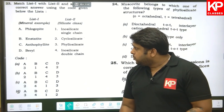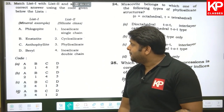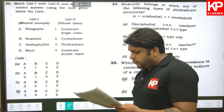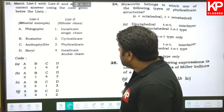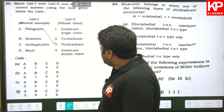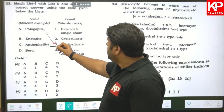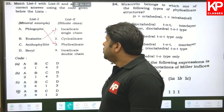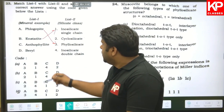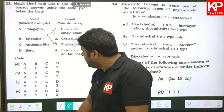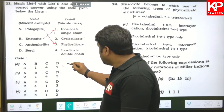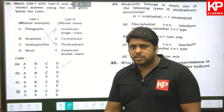Question twenty-three: match mineral examples with silicate class. Phlogopite is a phyllosilicate, and enstatite is an inosilicate. We have two known matches — A is with three, and enstatite is with one, so B is initially considered, but working through the options, A is the right answer.